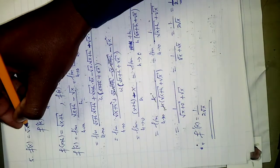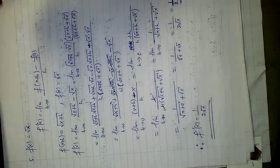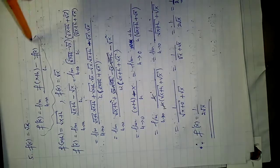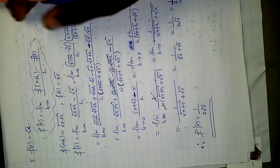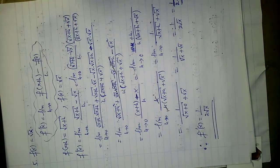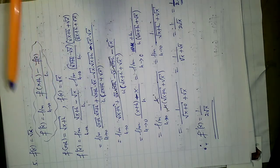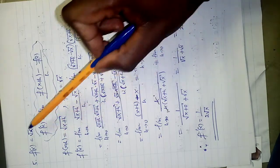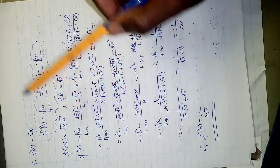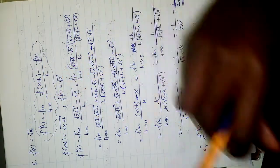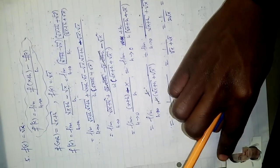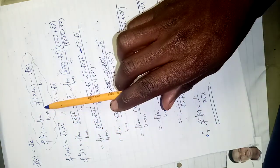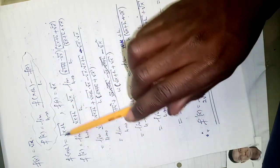Our function is f(x) = √x. We write the formula again — the formula for the first principle of derivatives. Then we write f(x+h): wherever I see x, I plug in x+h. And f(x) remains the same. We plug them into the formula.